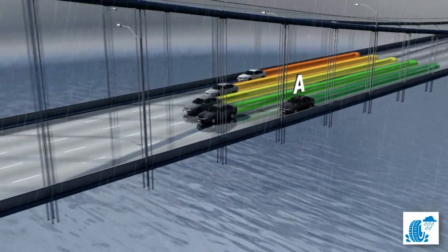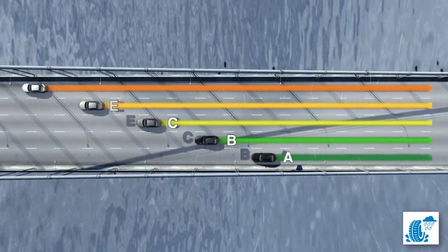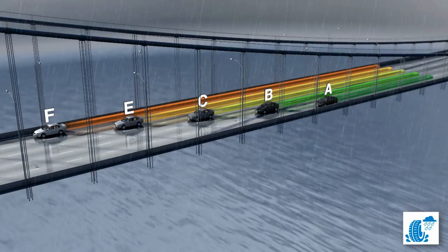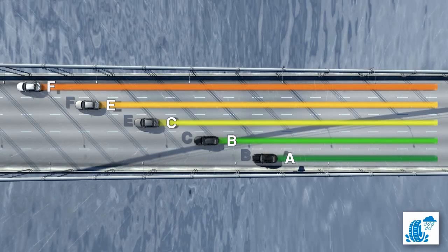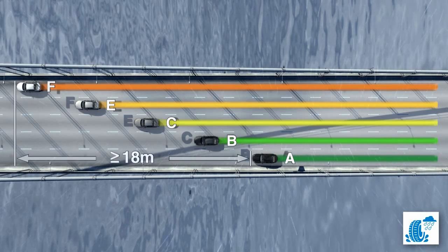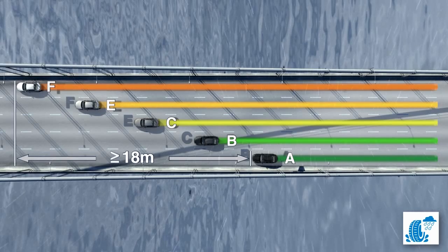A car with tyres from class B stops between 3 and 6 metres later. Class C tyres need between another 3 and 6 metres to come to a standstill, and the same applies to classes E and F. D and G have not been given a value. In concrete terms, this means there is a difference of over 18 metres between the braking distance for class A and class F.